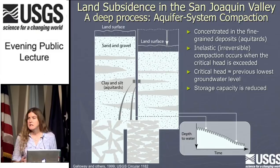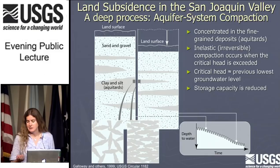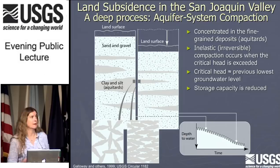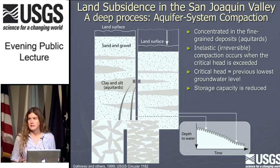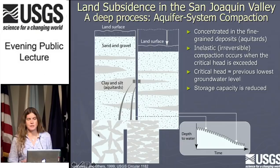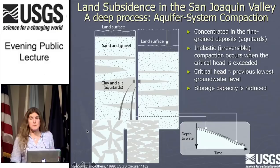Aquifer system compaction is a very deep process. Aquifer systems are composed of sands, gravels, clays, and silts. If you pick up a handful of sand at the beach, the grains are fairly rounded. But clay is not — clay is platy, and clay is kind of our villain in the compaction story. The aquifer system compaction is concentrated in the clay layers. When deposited, clay is in more or less random orientations. In between these grains is water — that's where water is stored, in what's called the pore space.